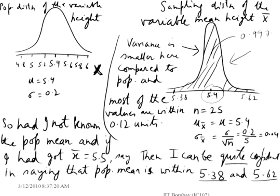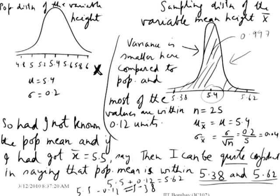Therefore, if I get a value of X-bar to be 5.5, then I can be quite confident in saying that the population mean is within 3 SD of this value of 5.5. So to 5.5, I have added 0.12 to get 5.62 and subtracted 0.12 to get 5.38. The value of the population mean is expected to lie between these two values, and I'm confident that it's going to be captured 99.7% of the time.